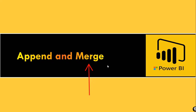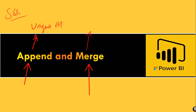Merge is similar to joins in SQL query, whereas Append is similar to Union All in SQL query. I mention this because when you attend an interview, they will ask you this question — what is Append, how do you do Append in SQL? The answer is Union All. And Merge is equivalent to Join in SQL, where you have different types: left outer join, right outer join, and all those things.